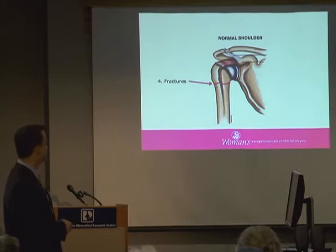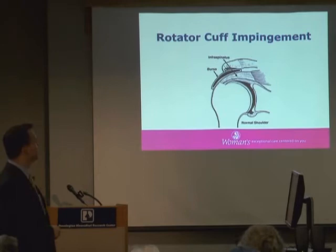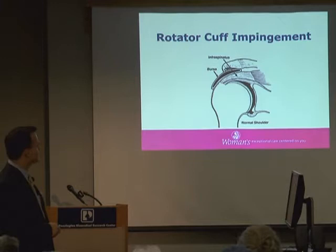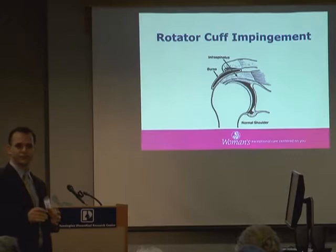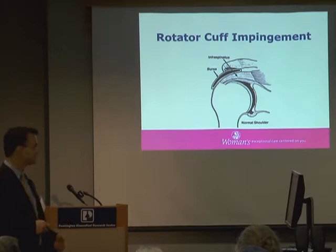So we'll start with impingement. This is the shoulder joint — the ball and socket. The rotator cuff attaches right above the humeral head. There's a bursa right on top of the rotator cuff — a fluid-filled sac with a very small amount of fluid, found between soft tissue structures and bone to provide shock absorption. It can get inflamed too. Right above the bursa is the acromion.